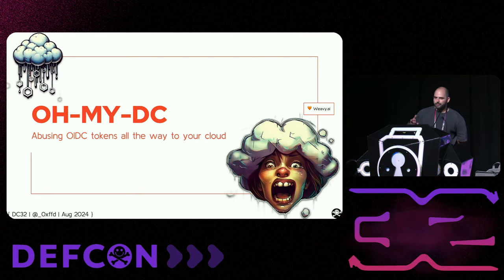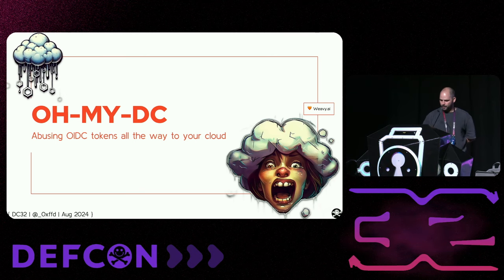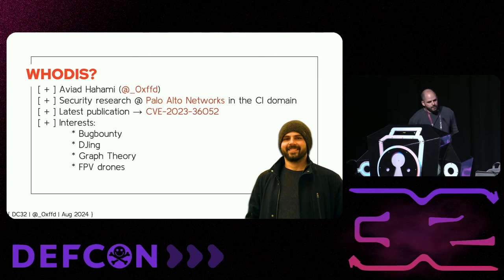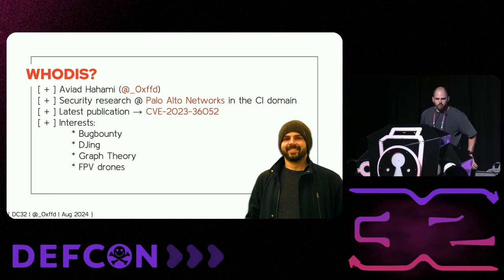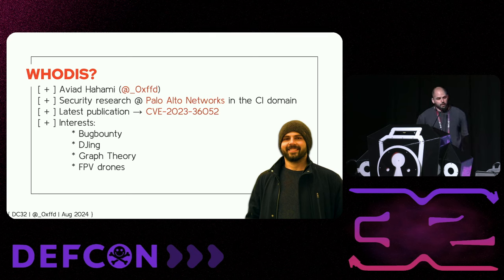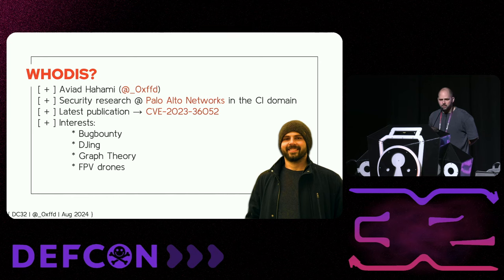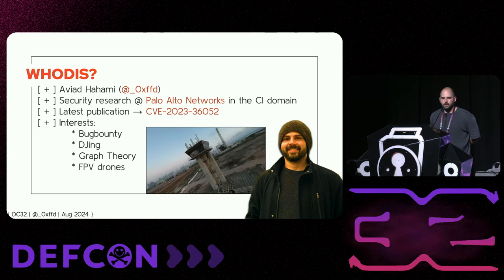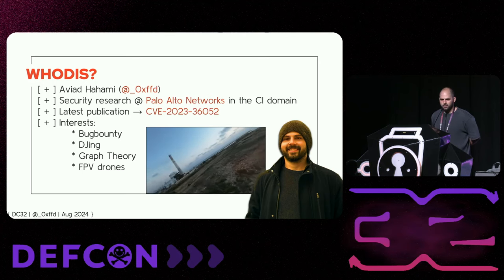If Adnan and John are here, thank you for the build-up — I hope I'll satisfy that. My name is Aviad Hachami. This is my Twitter handle. I do security research at Palo Alto, mainly in the CI domain. I welcome you to check my latest publication — this is Azure CLI information leakage with an 8.6 score somehow, but it probably affected all your ASG usages. I also do bug bounty, I DJ, I do graph theory and FPV drones — not necessarily in this order.